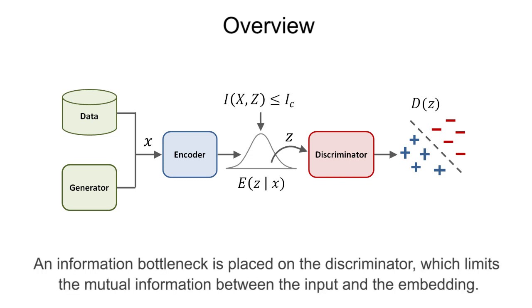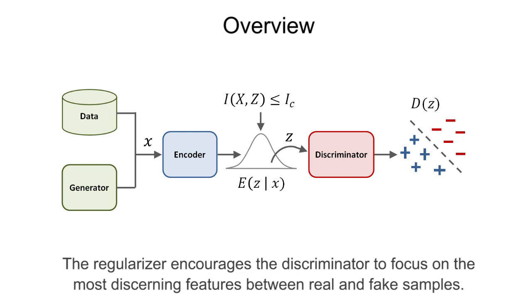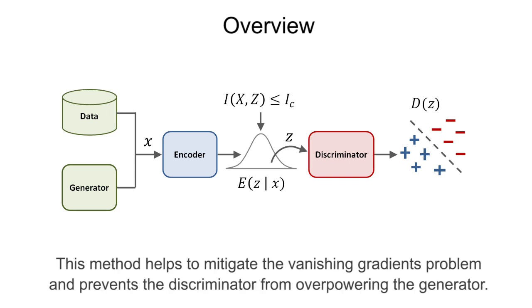An information bottleneck is placed on the discriminator, which limits the mutual information between the input and the embedding. The regularizer encourages the discriminator to focus on the most discerning features between real and fake samples. This method helps to mitigate the vanishing gradients problem and prevents the discriminator from overpowering the generator.